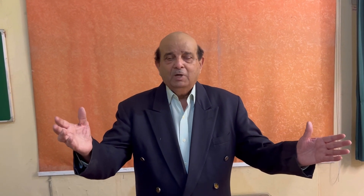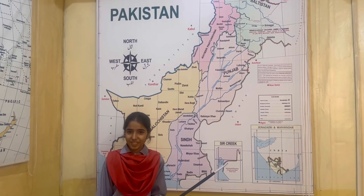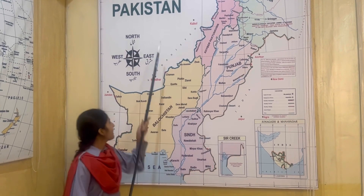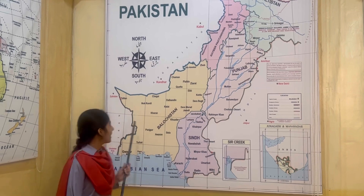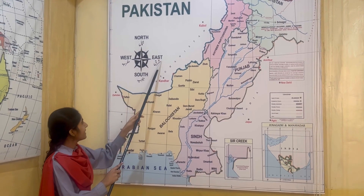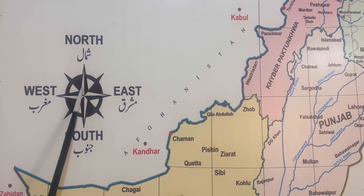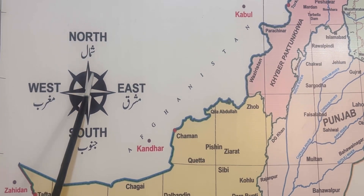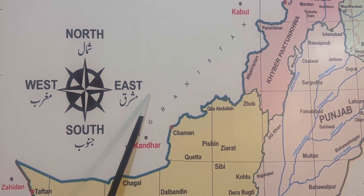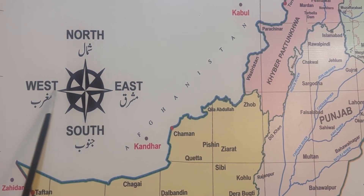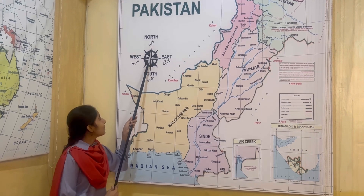Our students from the junior wing are going to discuss with you about the Pakistan map. My name is Keshav. I am standing in front of the Pakistan map. Before starting, I would like to orientate the cardinal directions on the compass rose: towards upper is north, towards bottom is south, towards right is east, and towards left is west. No direction is identical — upward on all the maps.